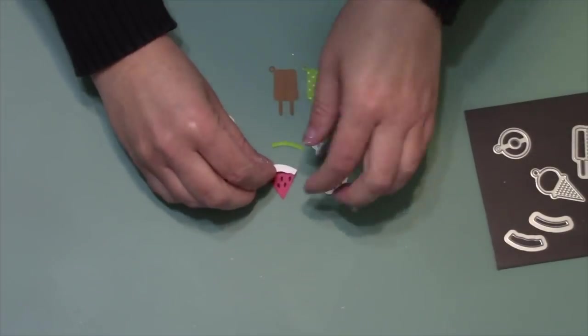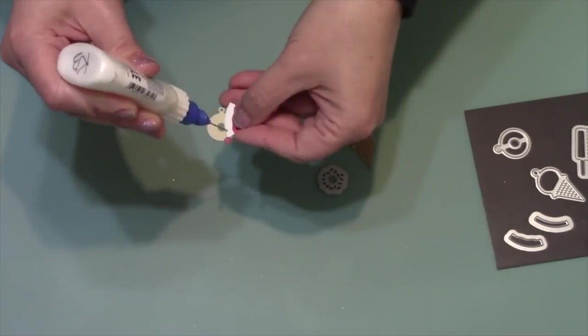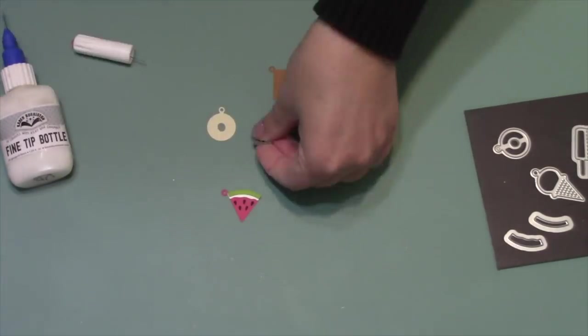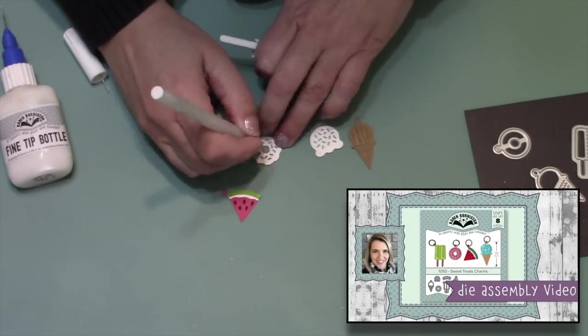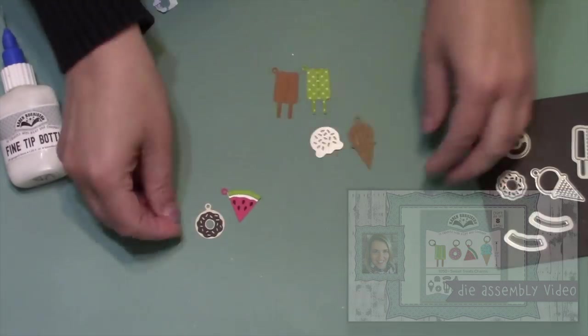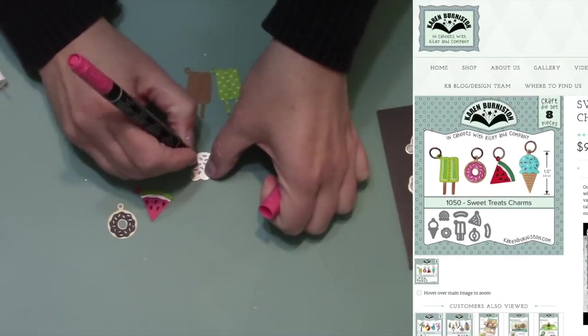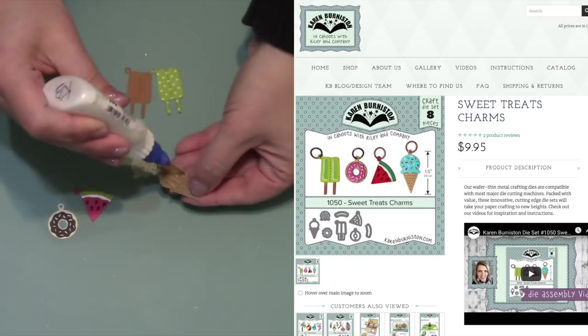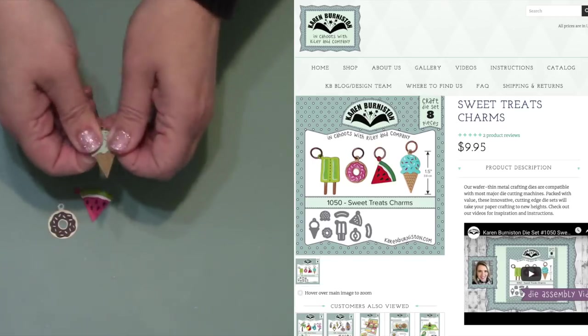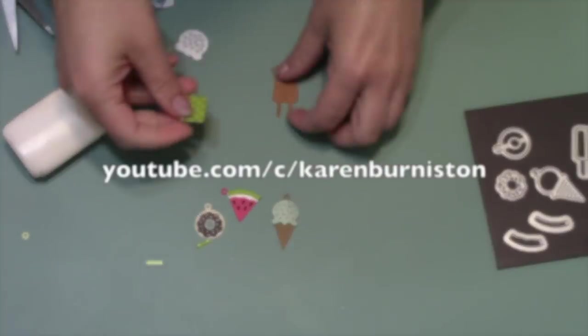I'm going to get these charms assembled. If you'd like to see a slower version of this process, you can watch the assembly video for the Sweet Treats charms. You can always find those assembly videos on the product page on our website. Just go in and look for Sweet Treats charms and the video will be right there on the product page.